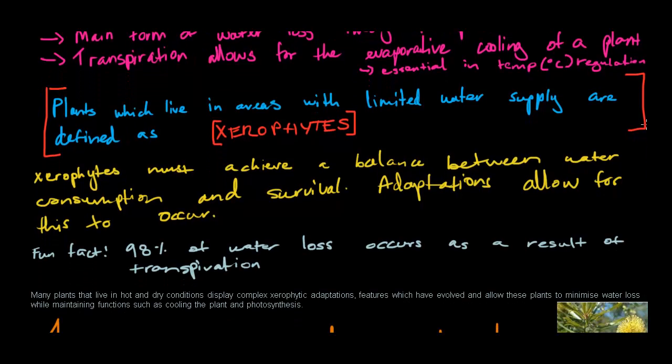Plants which live in areas with limited water supply are defined as xerophytes. Now, xerophytes are what we're going to be focusing on this time, and these xerophytes, they must achieve a balance between water consumption and survival. So these adaptations allow for this to occur. Something that we've never realized is that these plants in the deserts, how are they supposed to survive with such little water? Well, that's where these adaptations come in. And these adaptations basically allow for them to maintain this balance between how much water they have and the ability of actually surviving.